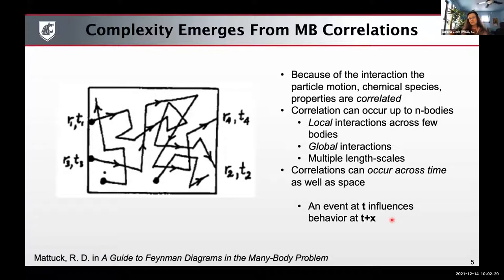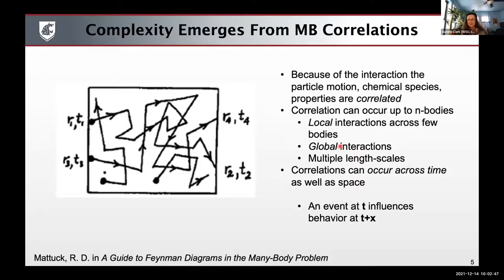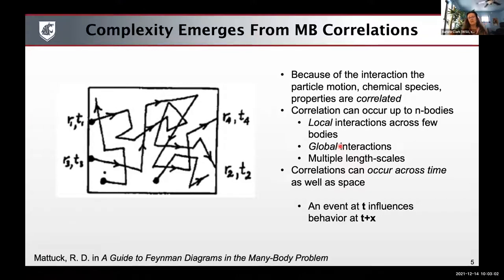This is really because there are interactions between the particles being used within simulation methodologies, whether it's electronic structure or statistical mechanics methods. This causes correlations that can be across different scales — from local to global correlations, across multiple length scales, where phenomena that occur on the ultrafast timescale propagate into really long timescales. This presents a huge challenge for using chemical data to inform and advance theories that get implemented in software algorithms.